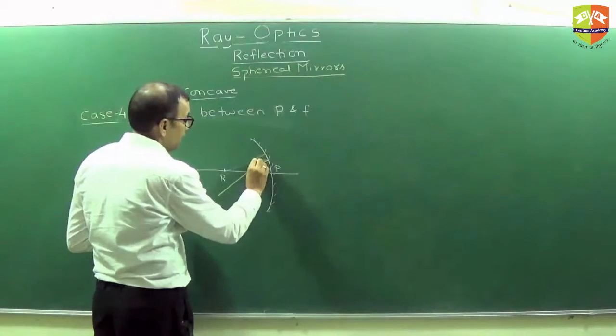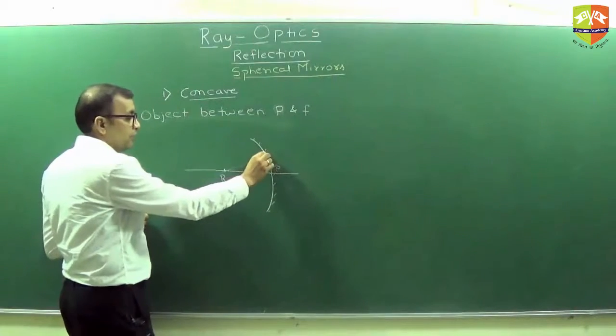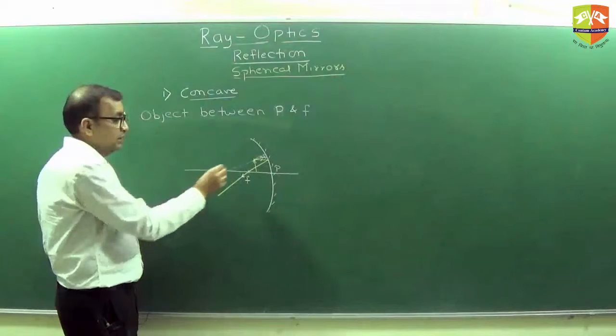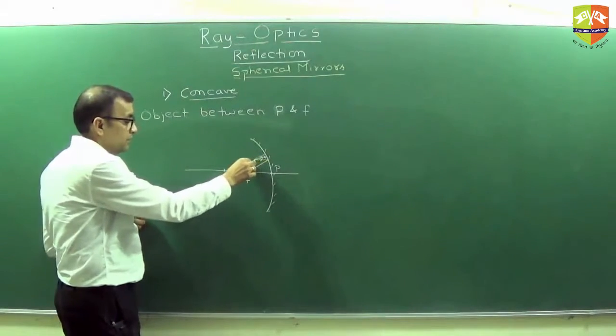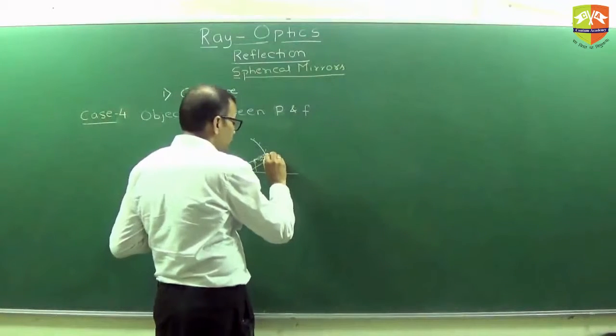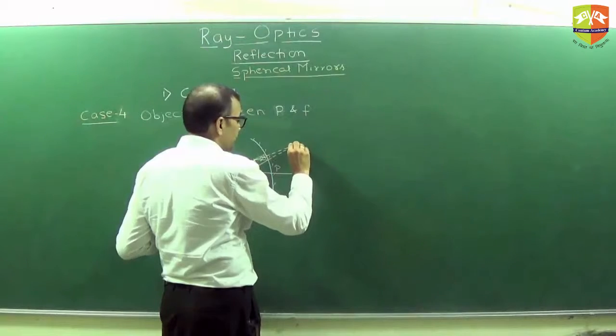But if there is a ray along the direction of R like this, so it is hitting in the direction of radius only, right. So will these two rays ever meet? They will not ever meet. They will just keep on going away from each other. But they will appear to meet behind, so it looks like a plane mirror scenario.